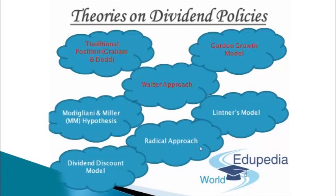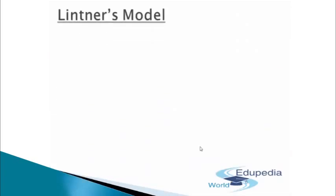Theories on Dividend Policies: Traditional Position, Graham and Dodd — we have already covered. Walter's Approach has already been done. Gordon Growth Model is also done. In today's presentation, I will be covering Lintner's Model and the Radical Approach, along with the Bird in Hand Theory. The Dividend Discount Model and Modigliani-Miller will be taken care of in my next presentation. Let's move with the first topic of the day — Lintner's Model.